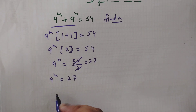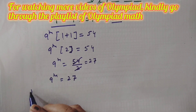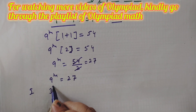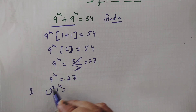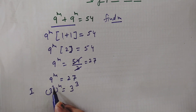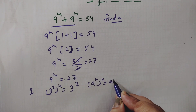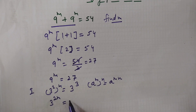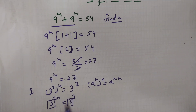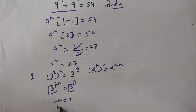There are two methods for finding the value of m. In the first method, we write 9 as 3 squared and 27 as 3 cubed. Using the exponent law — a power m, whole power n equals a power mn — we get 3 to the power 2m equals 3 cubed. Since the bases are the same, we equate the powers: 2m equals 3.